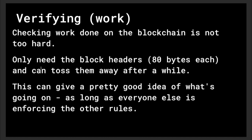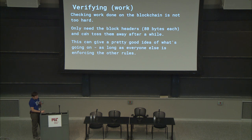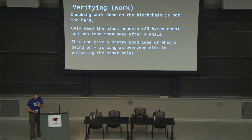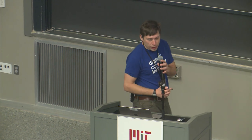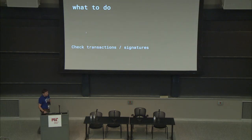Verifying the work done — this Nakamoto consensus heaviest-chain most-work algorithm — is getting trickier. One of the big ideas in Bitcoin was doing consensus based on proof of work. You get all these block headers, decide between them, adjust the difficulties. They're not too big — maybe 50 megabytes total for the last 11 years of Bitcoin. So you get a good idea of what's going on: here's the latest block hash and we all agree on this hash, and as long as everyone else is enforcing the other rules, you have a pretty safe picture of what's going on.